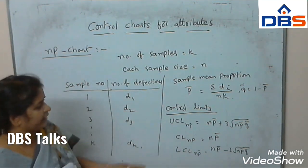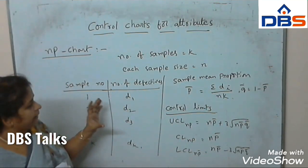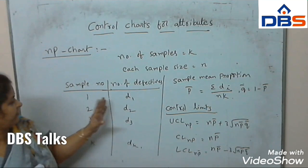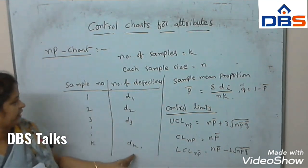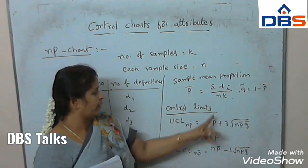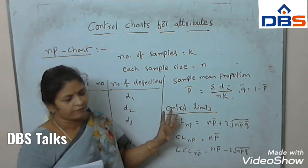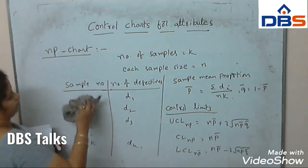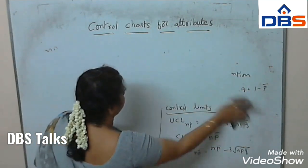In this case, we first find the control limits. We take K samples with each sample size N, and find the number of defectives in each sample. We compute P-bar equals sigma Di by NK, and Q-bar. After that, we calculate the control limits and use them to draw the NP chart.